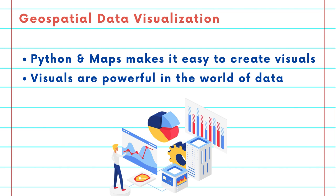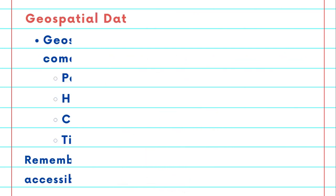Visualizations are powerful and Python makes it easier than ever to create them. Geospatial data visualization with Python comes in many forms. It could be a simple dot on a map representing a location, or it might be a heat map showing concentrations of activity. It could be a choropleth map coloring regions based on data value, or a time-lapse animation revealing changes over time, all achieved with Python.